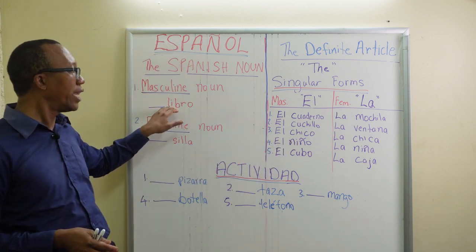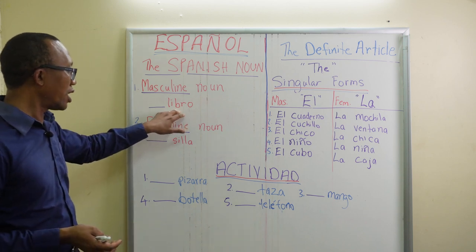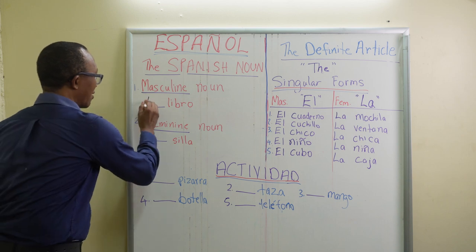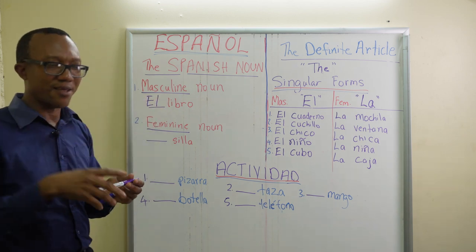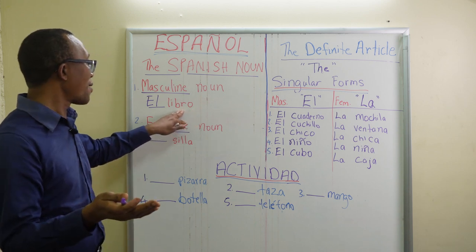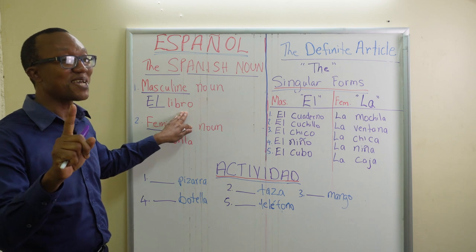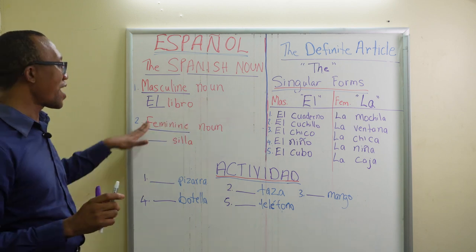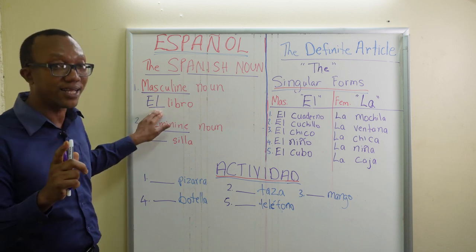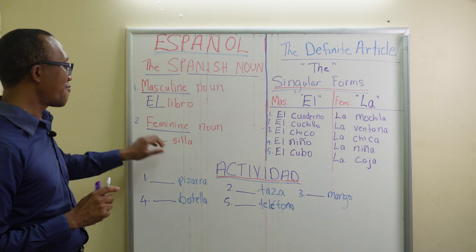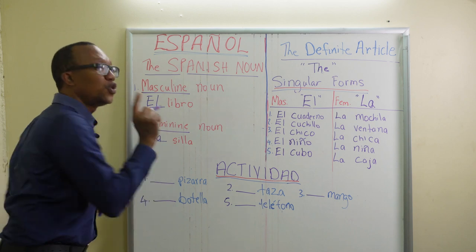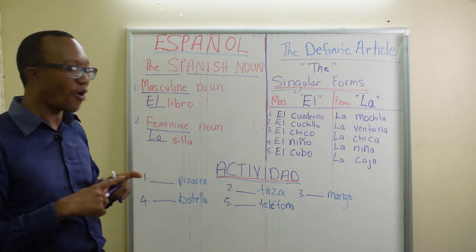Going back to 'libro' — this is masculine, so it is going to be 'el.' Now some of you will say once it ends in 'o' it is masculine, but not all the time. So it's good to always learn the article — whether it is masculine 'el libro' or feminine, always 'la.'